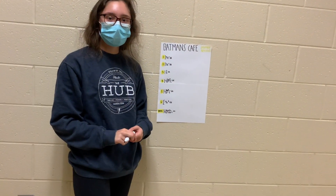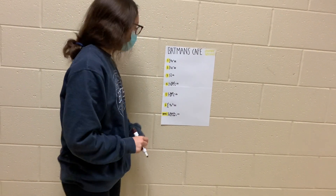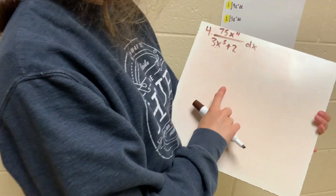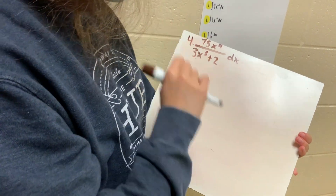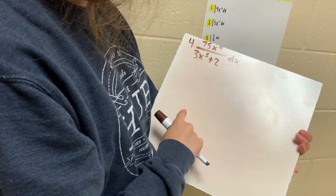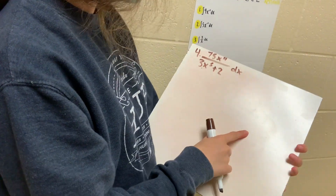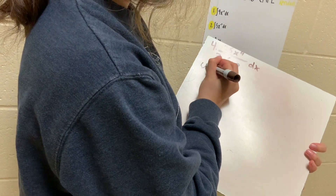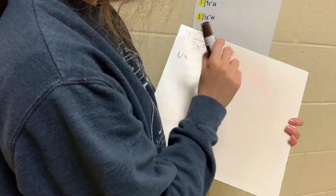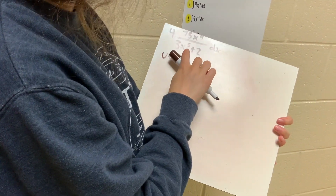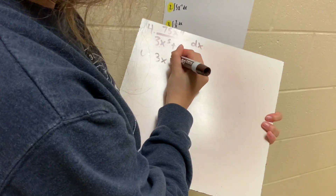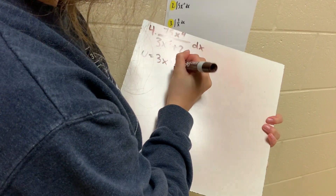Hi, can I get a number four? Sure, I'll show you how to do that. So for number four, the equation is 75x to the fourth over 3x to the fifth plus 2 dx. So first what you'll want to do is find u — you'll be using the denominator because 5 is a higher power than 4. So u equals 3x to the fifth plus 2.